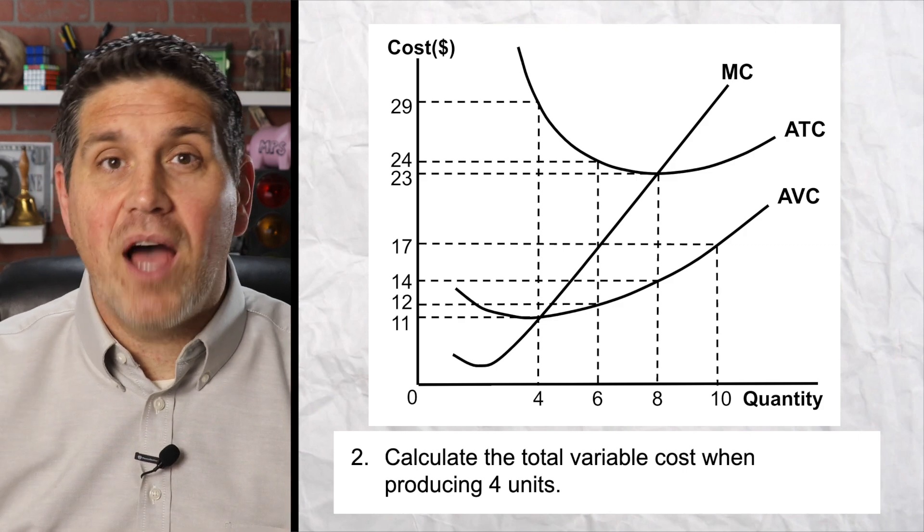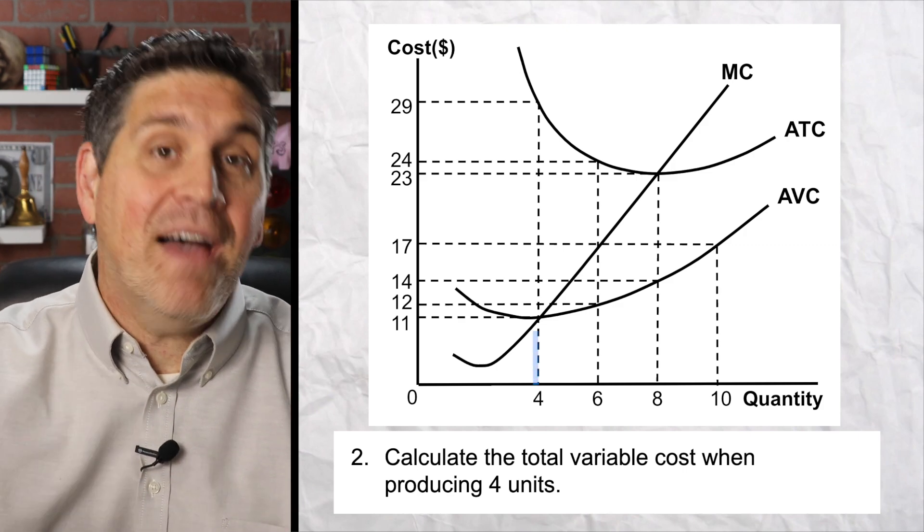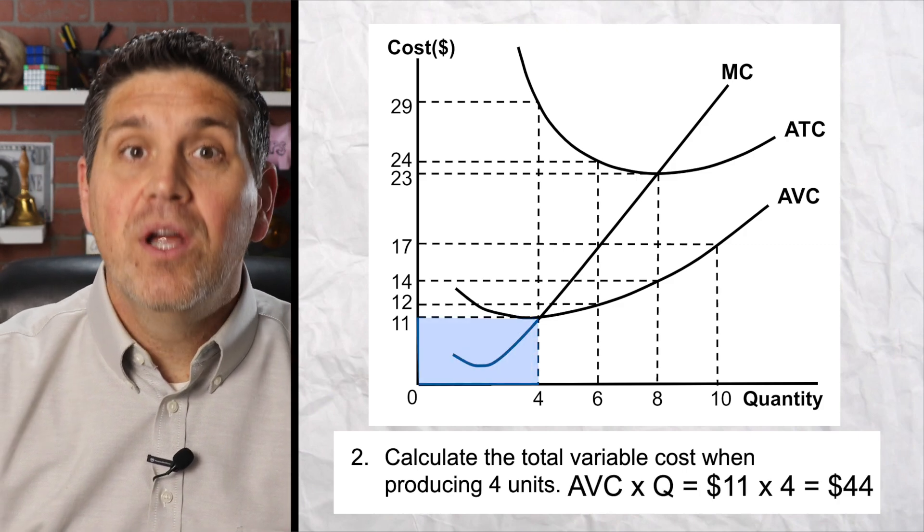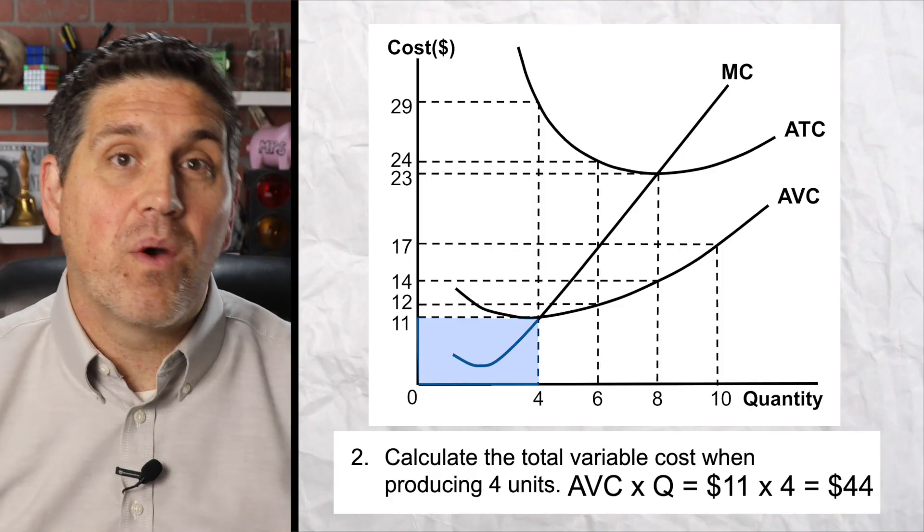For number two, to find the total variable cost of four units, you go up to the average variable cost at four, 11 times four is $44.